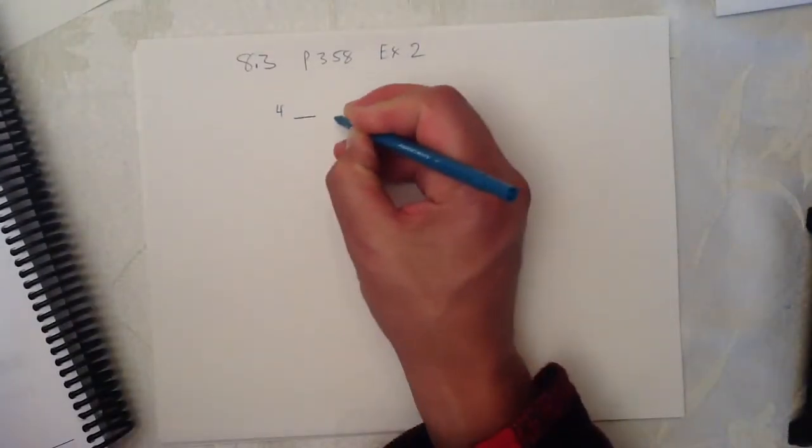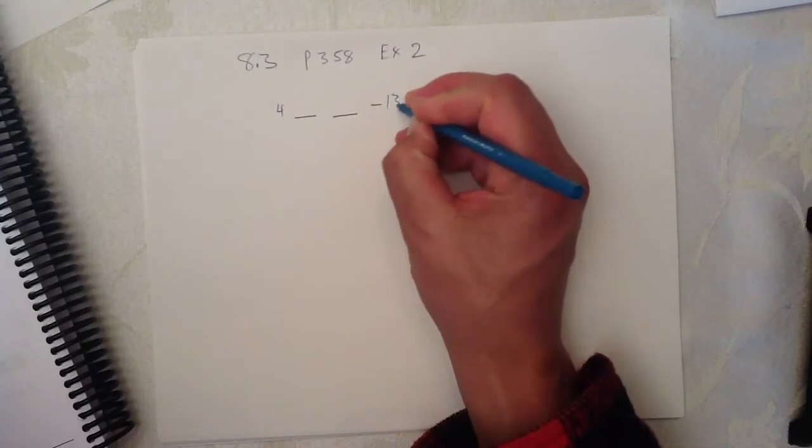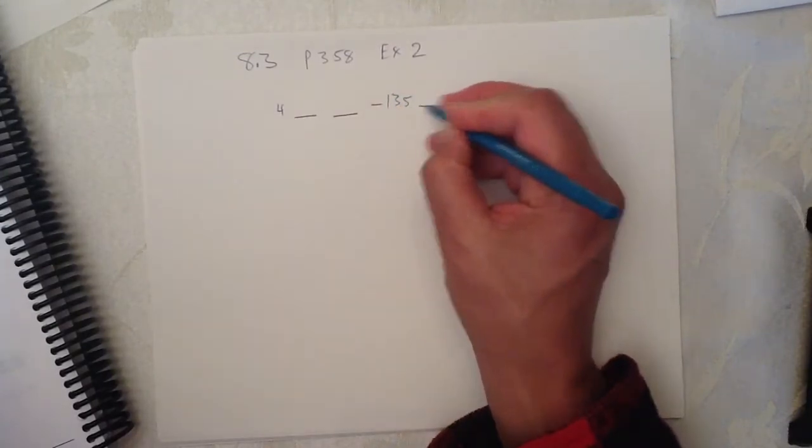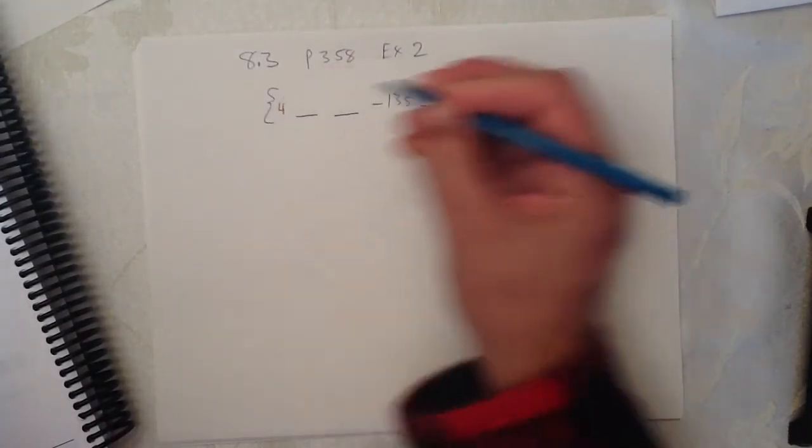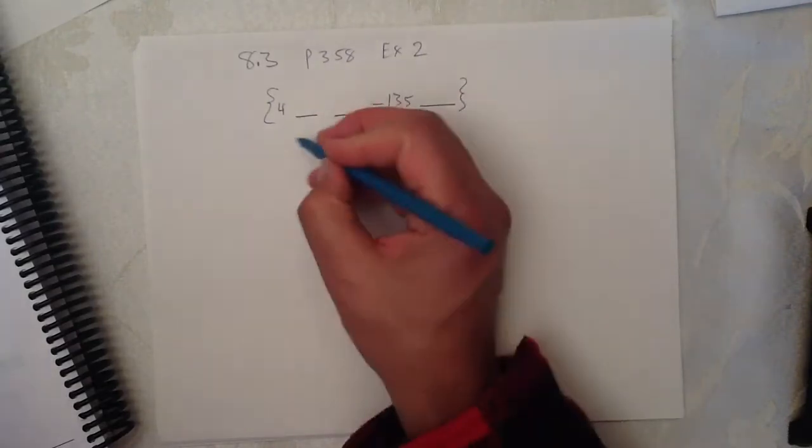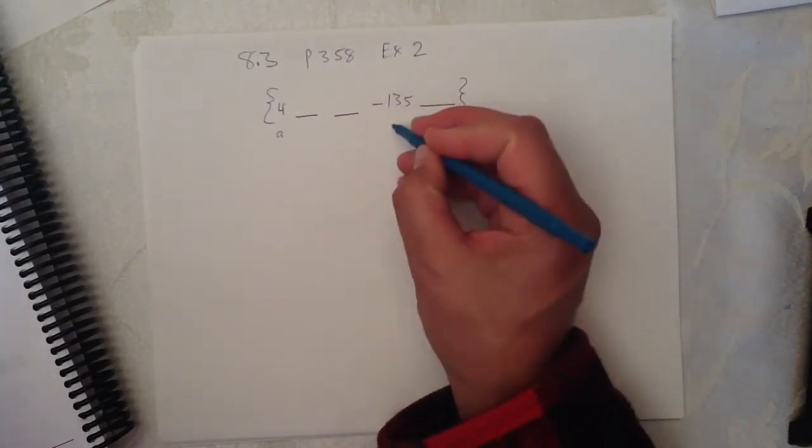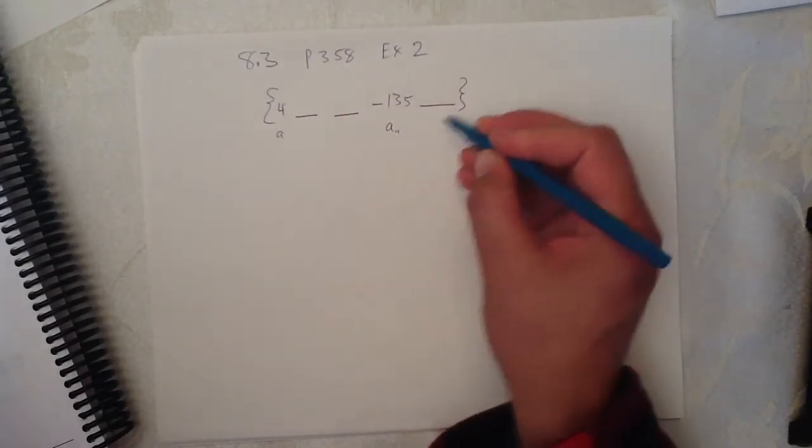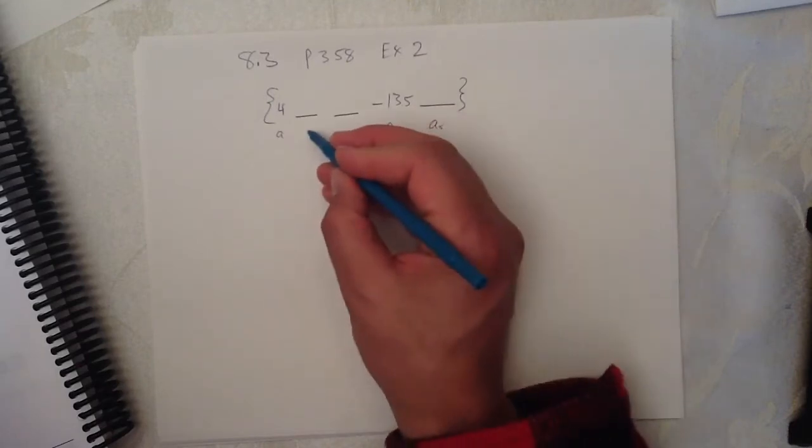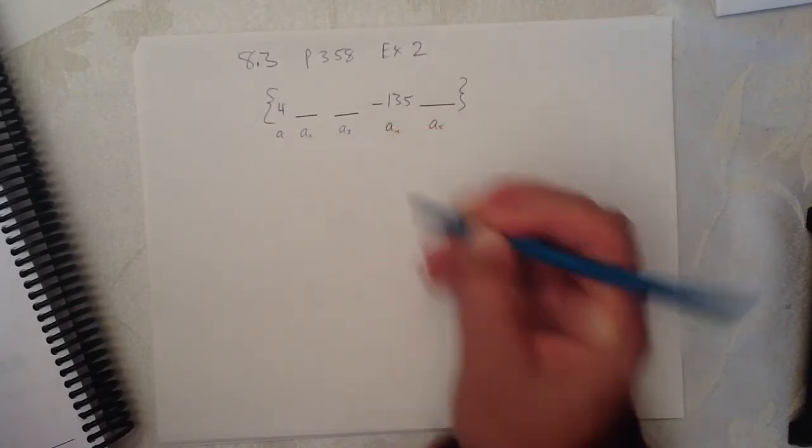I'm going to write that down here. Four, blank, blank, negative thirteen point five, and another blank. And that is our geometric series. This is A1, this is A4, A5 is over here, A2, A3.